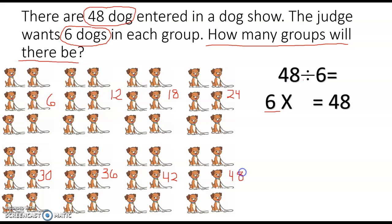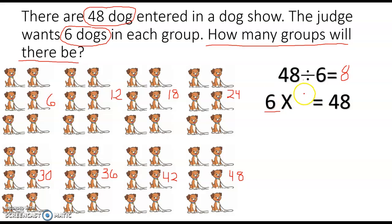And then our last group of six brings us to 48 — all 48 dogs have been put in a group. We put six dogs in each group. Now let's see how many groups we made: one, two, three, four, five, six, seven, eight groups. So 48 divided by six equals eight groups, or six times eight equals 48.